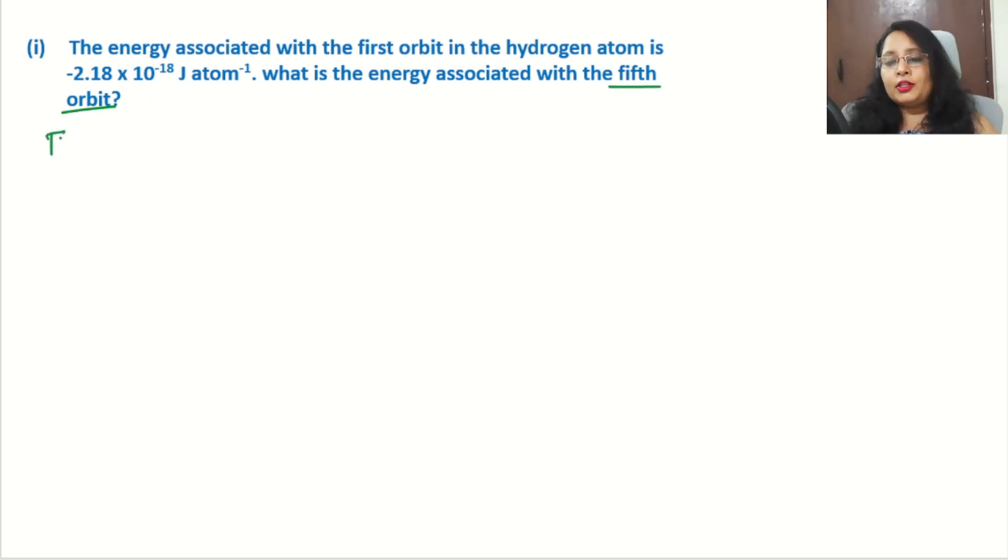We have the formula for this: En = -2.18 × 10^-18 × (1/n²) × z² joule.